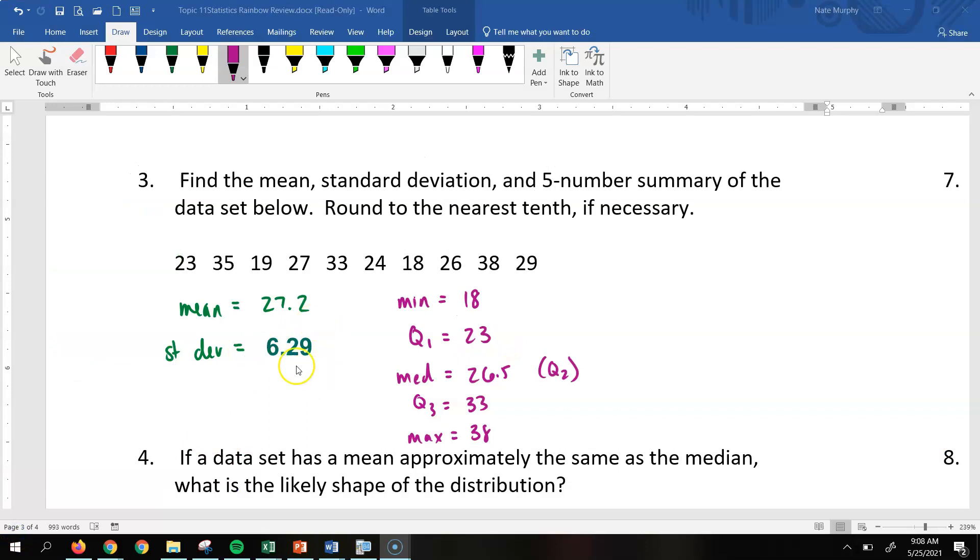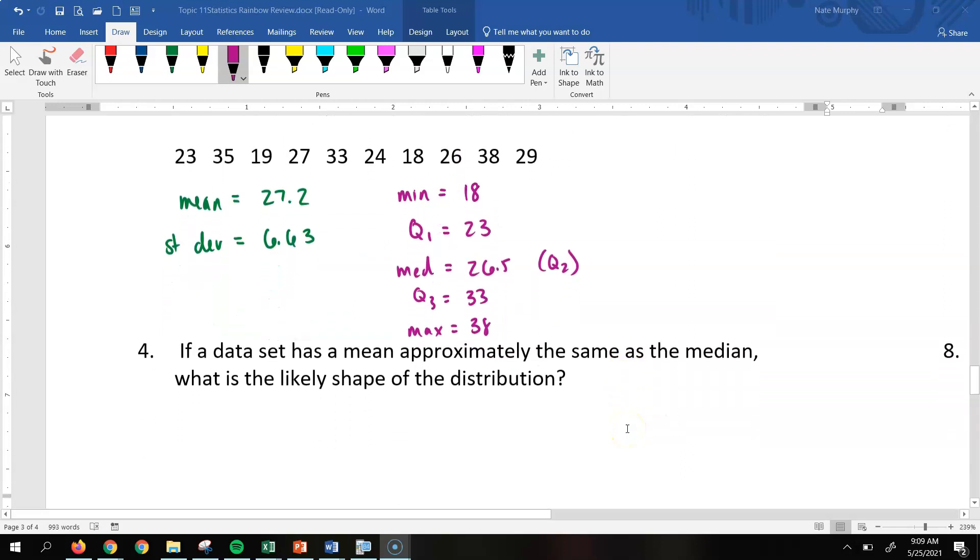So again, there they are there. So your mean, 27.2, standard deviation, 6.63, and then you can see your five-number summary. And again, the reason why we have that five-number summary is it allows us to create what's called a box plot or a box and whisker plot.